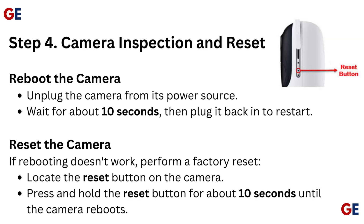Step 4: Camera inspection and reset. Reboot the camera by unplugging it from its power source, waiting about 10 seconds, then plugging it back in to restart. If rebooting doesn't work, perform a factory reset — locate the reset button on the camera and press and hold it for about 10 seconds until the camera reboots.